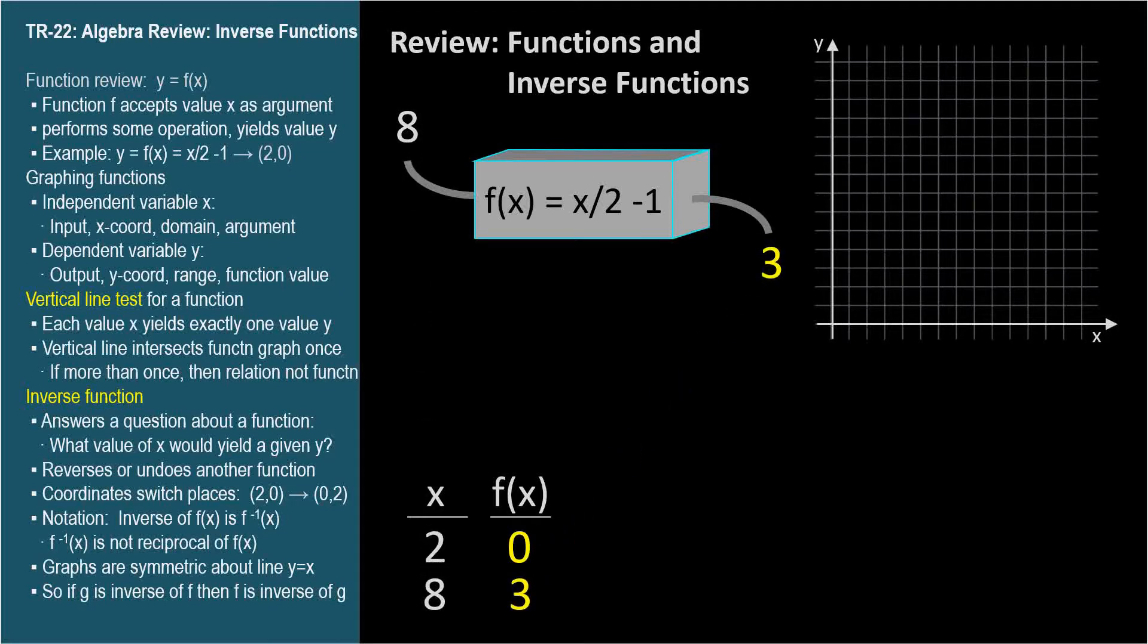x is the independent variable, and f of x is the dependent variable, because its value depends on the value for x. These pairs of numbers are ordered pairs, and functions can be graphed easily by plotting their independent and dependent variables as points on a Cartesian coordinate system.